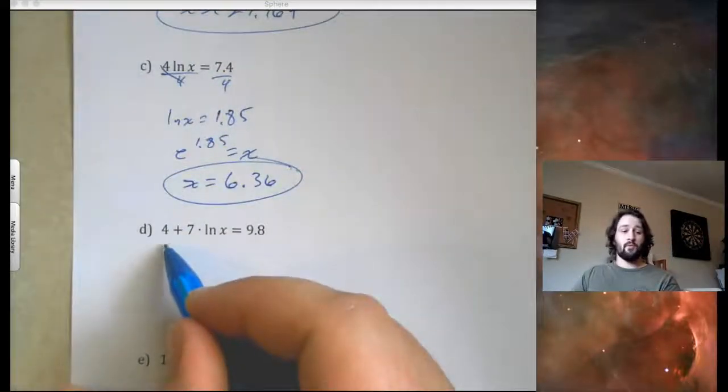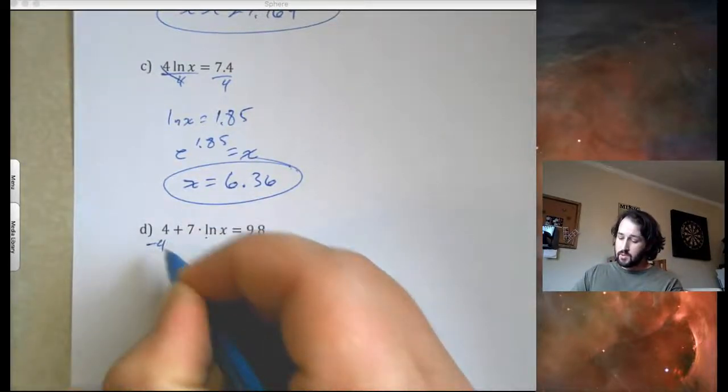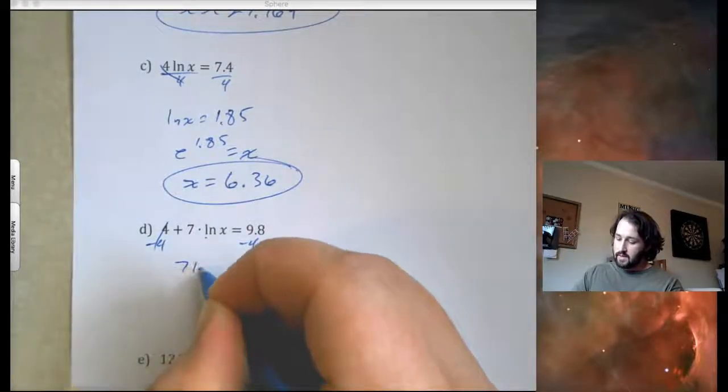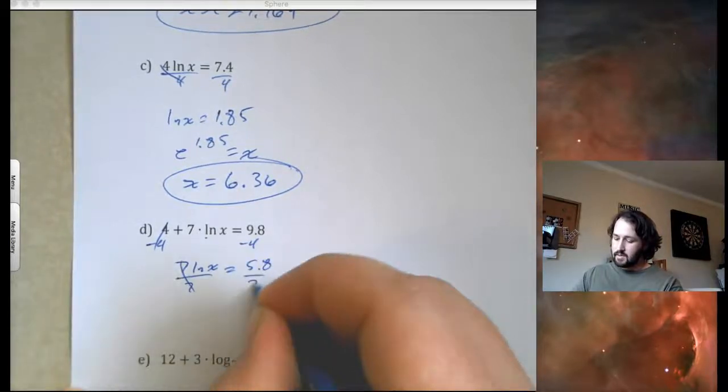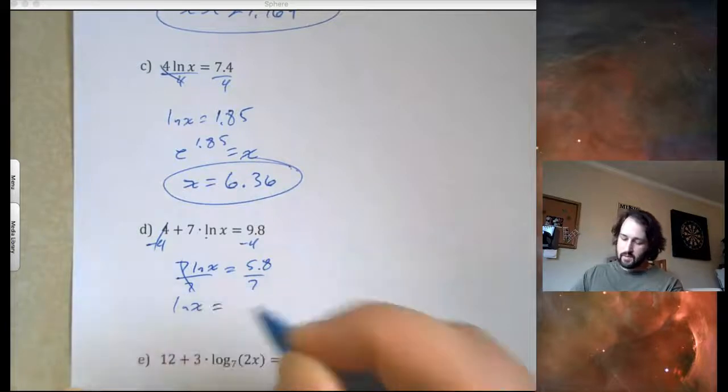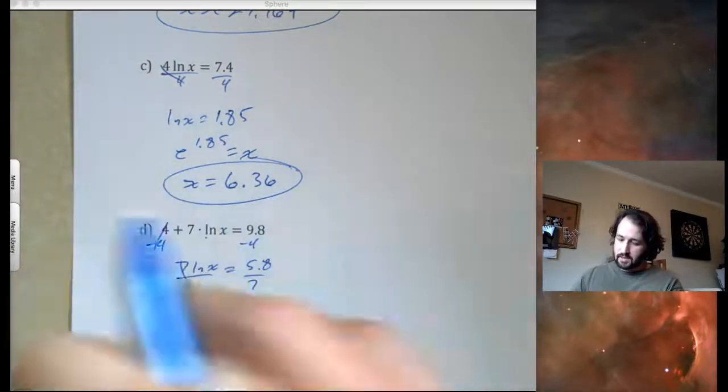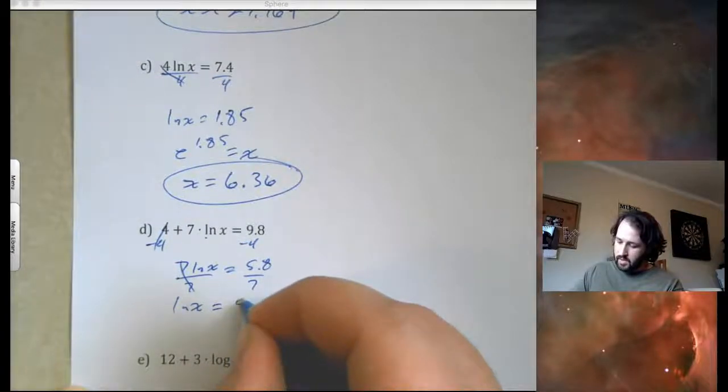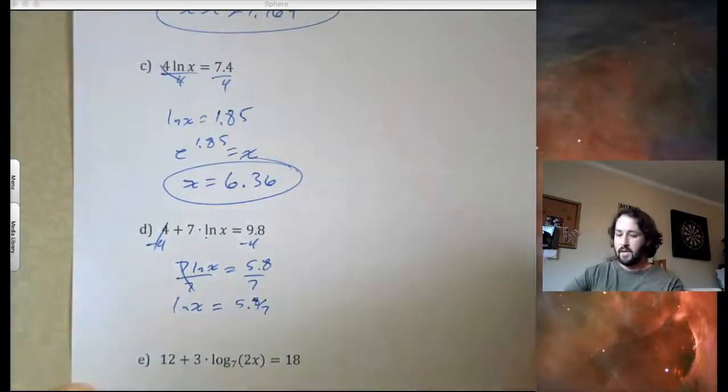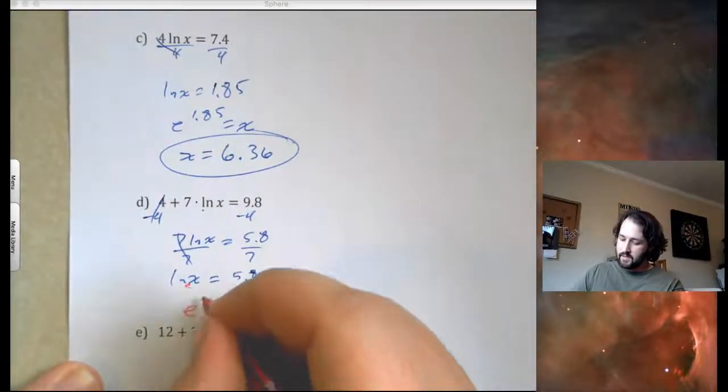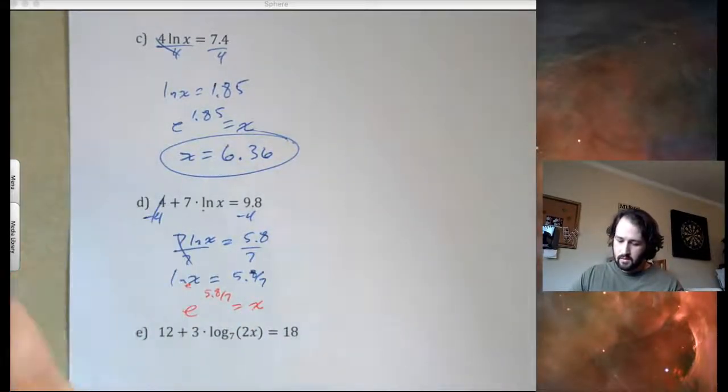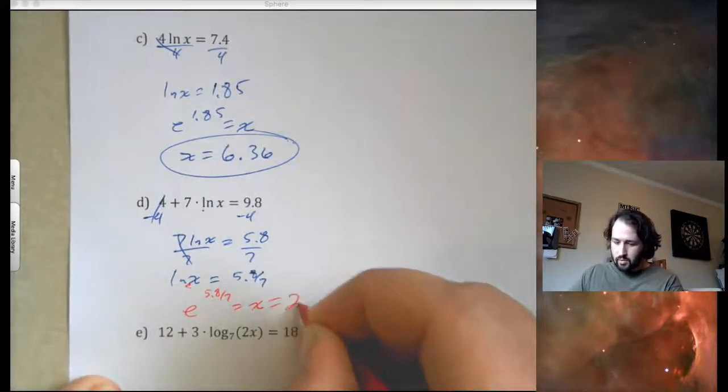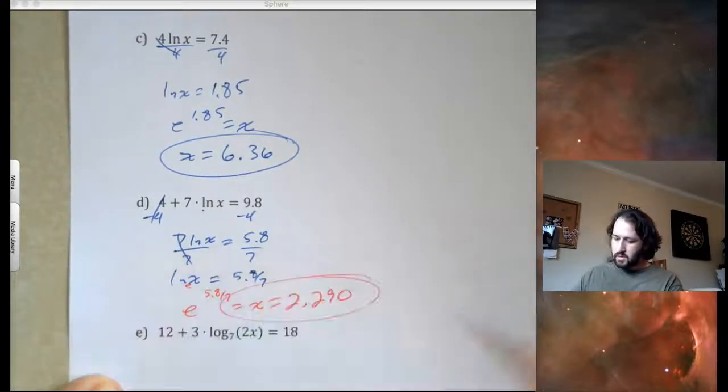This one. Notice I have a 4 plus 7 natural log of x. So, the first thing I'm going to do is I'm going to subtract that 4 to the other side. So, I have 7 ln of x equals 5.8. Now, I'm going to divide by 7 on both sides. So, ln of x equals 5.8 divided by 7, which is not a nice number. So, I'm going to leave it 5.8 over 7 to make sure that we're accurate. Now, because then I can rewrite this since the base is e. e to the 5.8 divided by 7 equals x. So, e to the 5.8 divided by 7 should be 2.290. And that should be it.